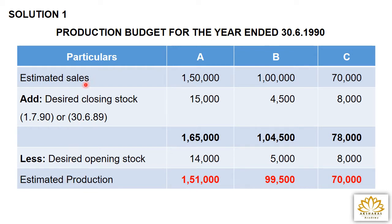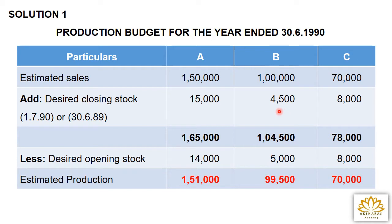Estimated sales: A = 1,50,000; B = 1,00,000; C = 70,000. Add desired closing stock — for 1790 opening stock and 3689 closing stock. So A = 15,000; B = 4,500; C = 8,000. Totals: A = 1,50,000 + 15,000 = 1,65,000; B = 1,00,000 + 4,500 = 1,04,500; C = 70,000 + 8,000 = 78,000.